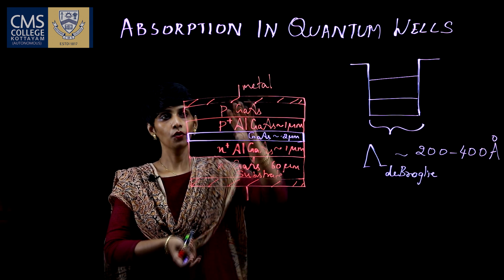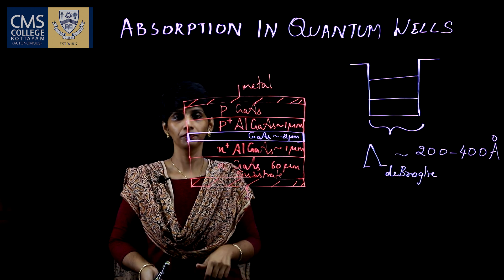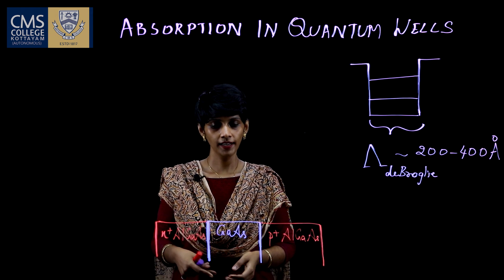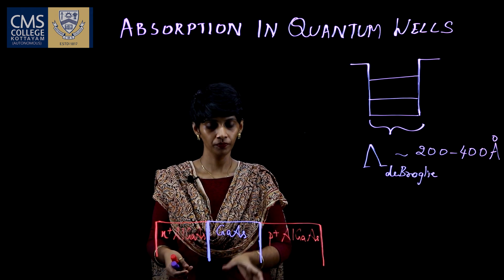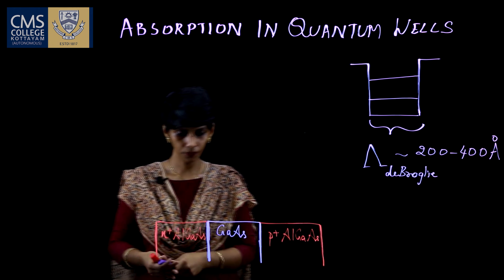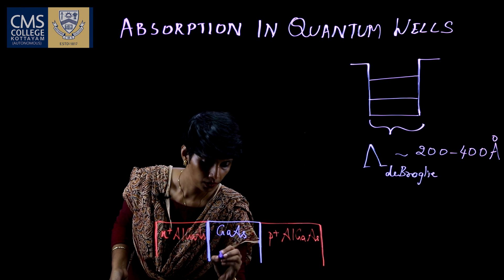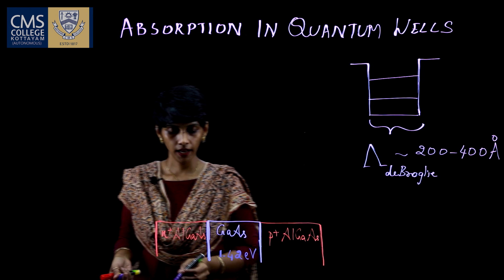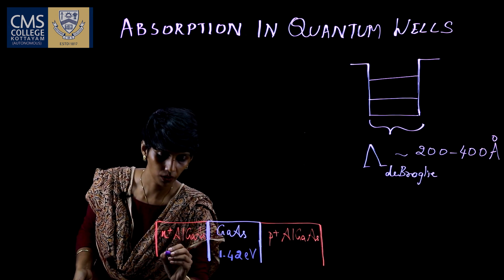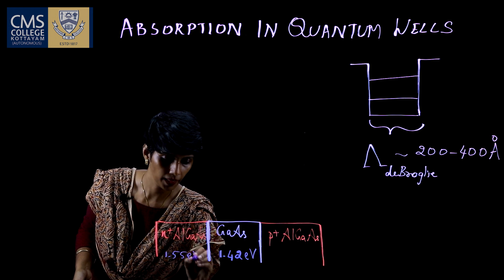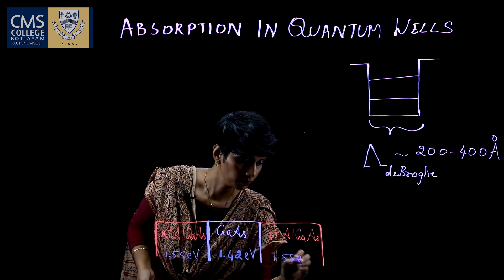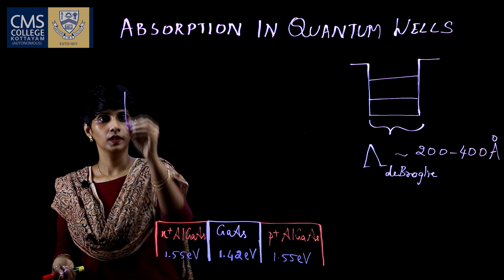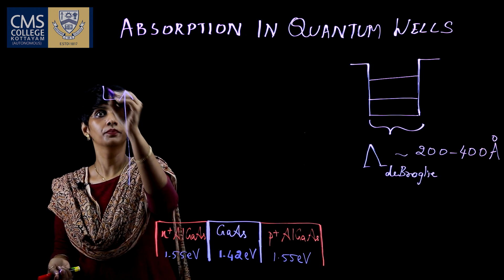Now, what I am going to do is rotate the structure 90 degrees. I have rotated the structure 90 degrees and zoomed into the active area alone. Gallium arsenide has a band gap energy of 1.42 electron volts and aluminium gallium arsenide has a higher band gap. Now I am going to draw the energy band diagram. This is the energy axis.